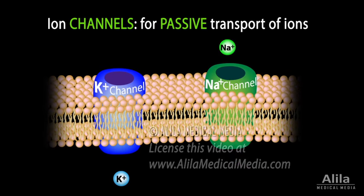Ion channels permit passive transport of ions. These are transmembrane proteins that form pores for ions to pass through. Most ion channels are specific for a certain type of ion. Ion channels can be classified by how they change their open or closed state in response to different factors of the environment.